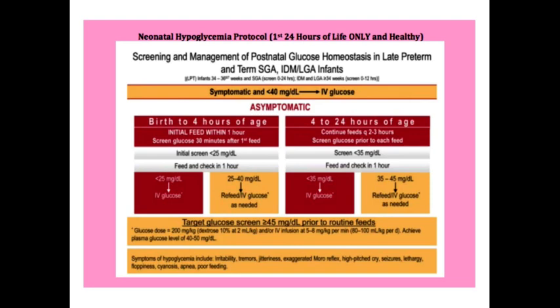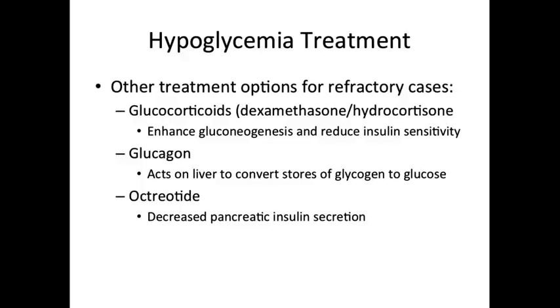This algorithm is also included in your resident code cards for easy reference. If treatment is refractory to refeeding and IV dextrose, other medications to consider include glucocorticoids, glucagon, and octreotide. At this point, the patient should be transferred to the NICU and further laboratory workup, as mentioned before, should be completed to look for other causes of hypoglycemia.